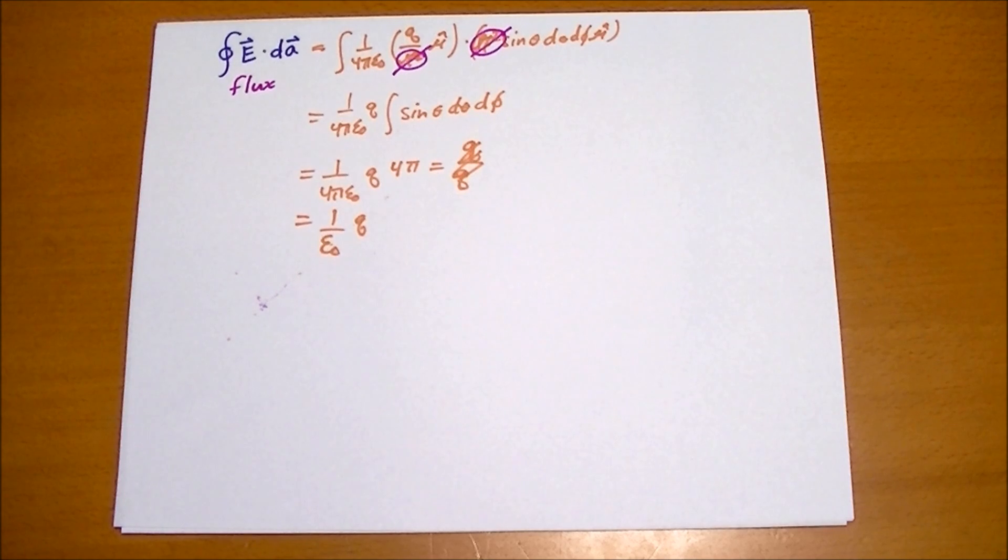But let's suppose you had a field that enclosed multiple charges. Well, by logic you'd say with more charge you'd have a higher flux. And so really,